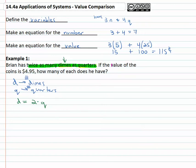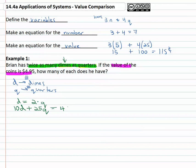The next part of the problem tells us that the value of the coins is four dollars and ninety-five cents, so let's make an equation for the value. To get value, we multiply each coin by its value. We don't know how many dimes there are, but each is worth ten cents. We don't know how many quarters, but each is worth twenty-five cents. Adding those together gives us the total: ten D plus twenty-five Q equals four hundred ninety-five cents.